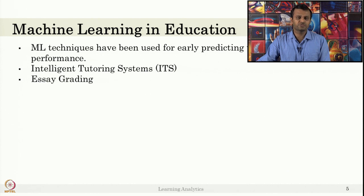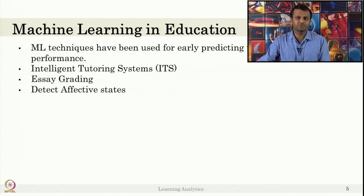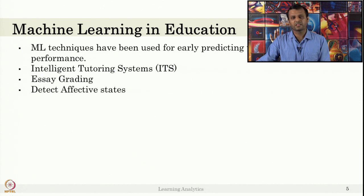Machine learning is also used for essay grading — automatically grading student essays by applying natural language processing techniques. Machine learning can also be used to predict students' affective states, like whether a student is bored or confused during an online lecture or classroom environment. Examples span different scales: using log data to predict performance, NLP for essay grading, and facial expressions or sensor data to predict affective states.